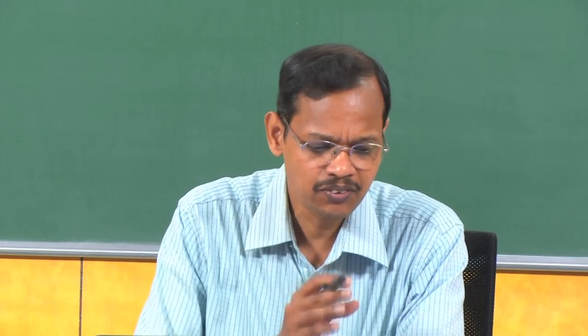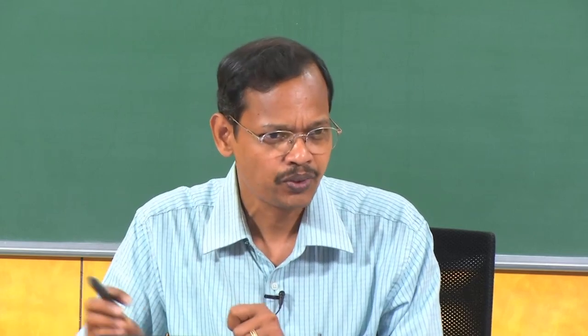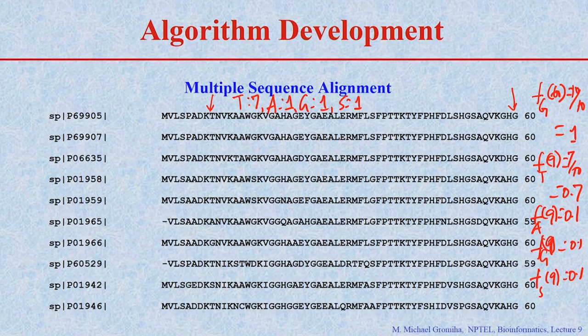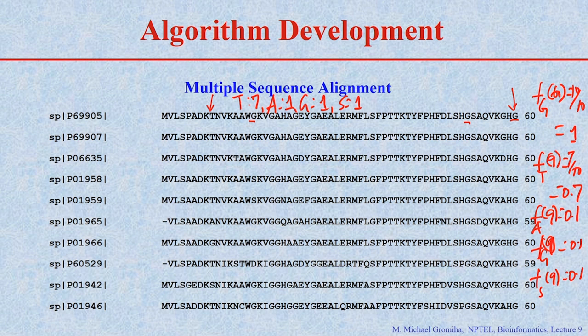There is another method called the variance-based method. Here, this considers the frequency of the same amino acid at different positions. For example, if you see glycine here, glycine here, and glycine here — in some cases it is highly conserved and in some cases there are variable residues. They compare how many positions with glycine occur, how many positions have similar residues, and what is the proportion of these residues taken into consideration when calculating a score.